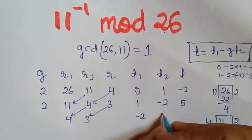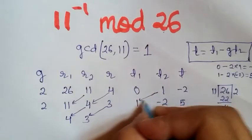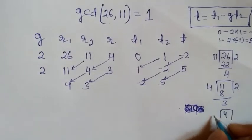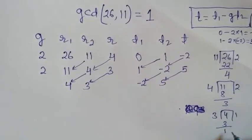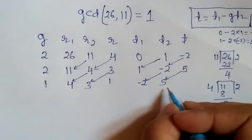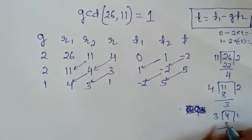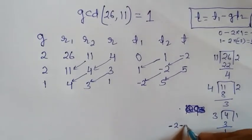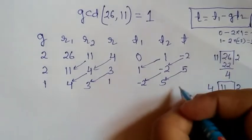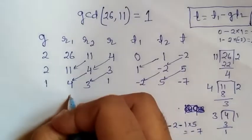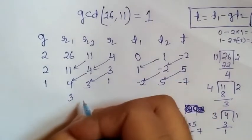Again R2 value comes to R1 giving 4, remainder 3 comes to R2. Now dividing 4 by 3 gives quotient 1 with remainder 1. We calculate T: T1 is minus 2, minus G which is 1, times T2 which is 5, giving minus 7.